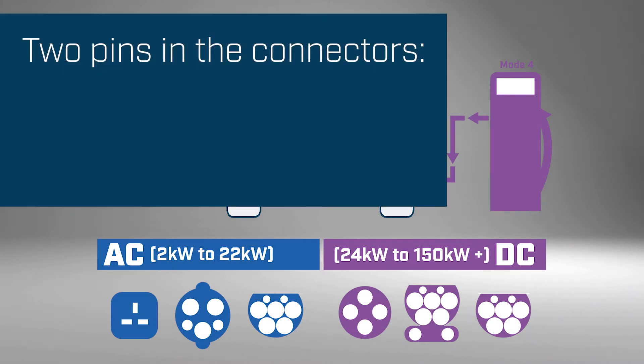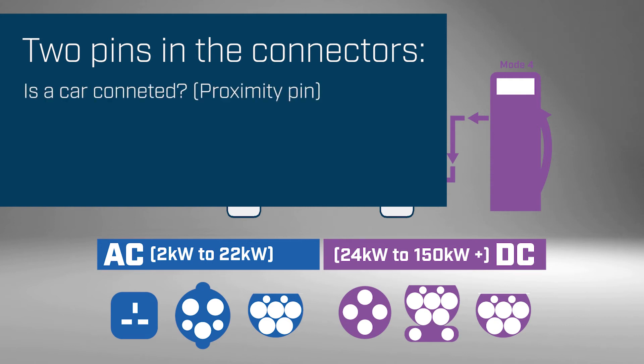But this communication is very, very simple. It typically uses two different types of pins in the connectors to know if there is a car connected. There is a proximity pin and then we have a pilot pin. This pilot pin basically only offers simple communication, such as: my battery is charged or not charged, or my battery is at 20 percent, 30 percent, or 40 percent. As I said, this communication is quite simple and the intelligence is mostly sitting behind in the charging point, in the charging station.